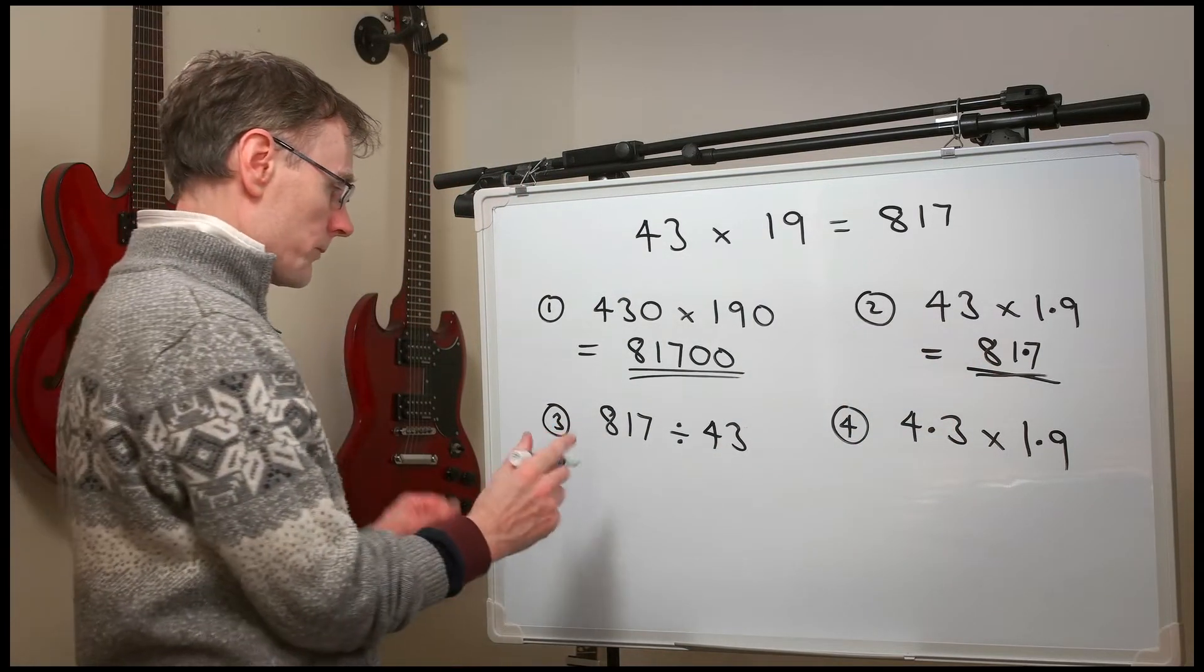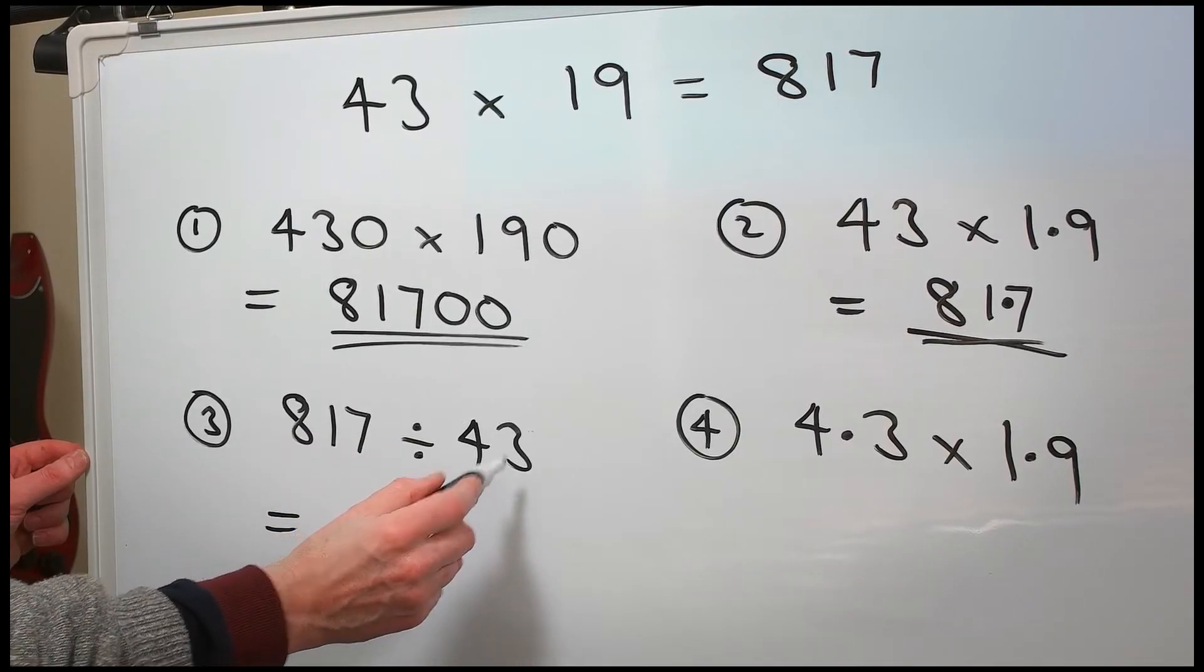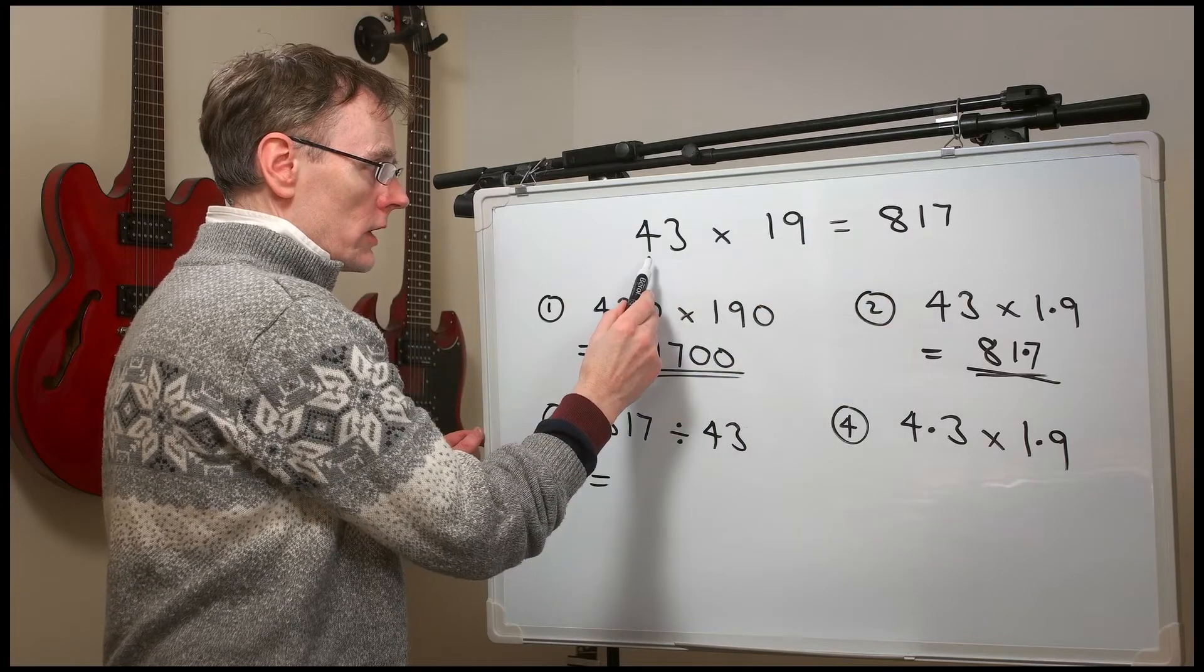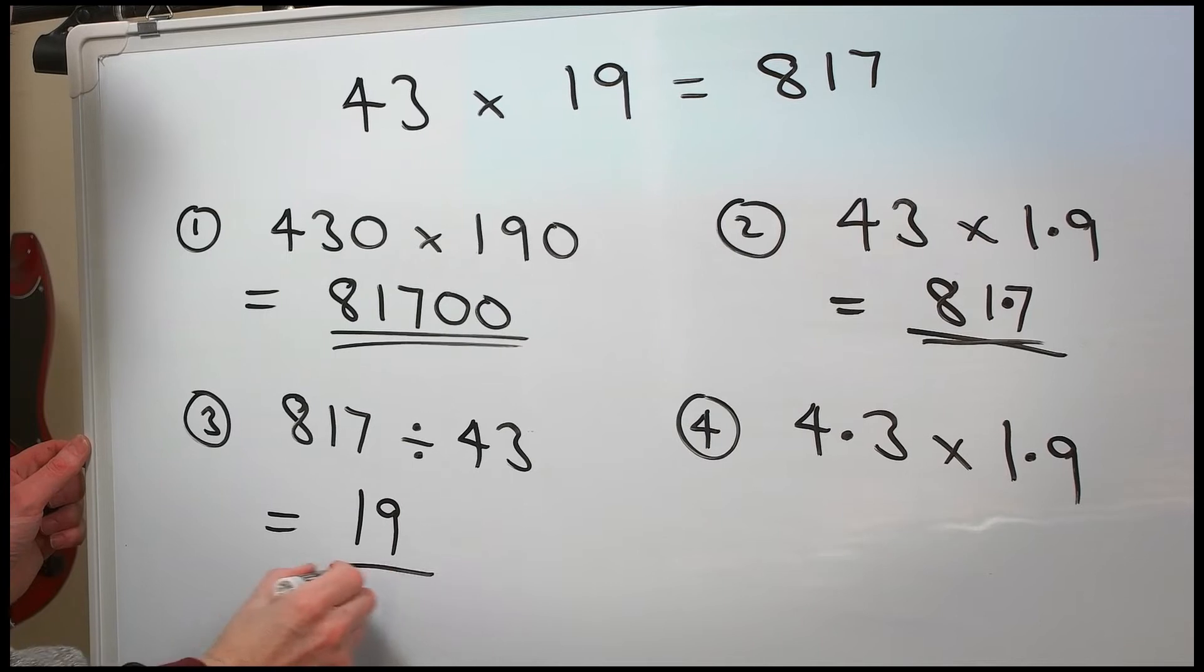Okay, number three. 817 divided by 43. 817 divided by 43 must be 19. Again, we're working backwards.